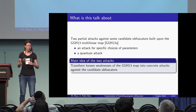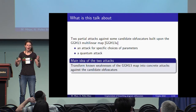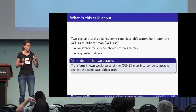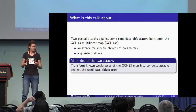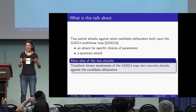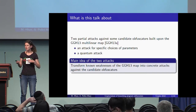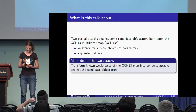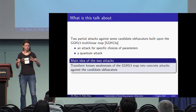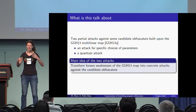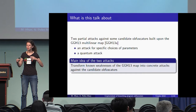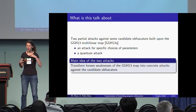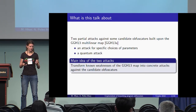So what we are going to present are two attacks against some candidate branching program obfuscators built upon the GGH13 multilinear map. They are partial attacks in the sense that the first attack works only for a specific set of parameters, and the second attack works only in the quantum setting. Both attacks use weaknesses of the underlying GGH13 multilinear map to construct concrete attacks against the candidate obfuscators.